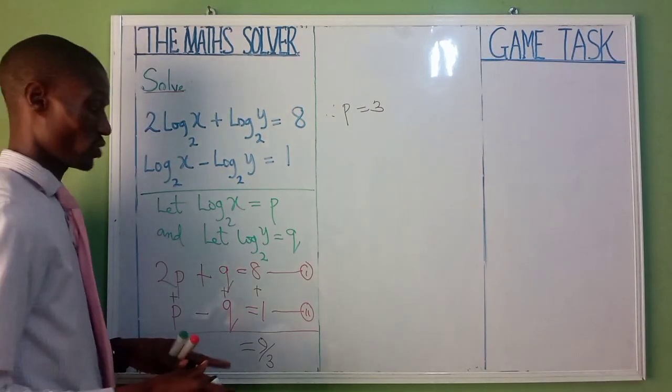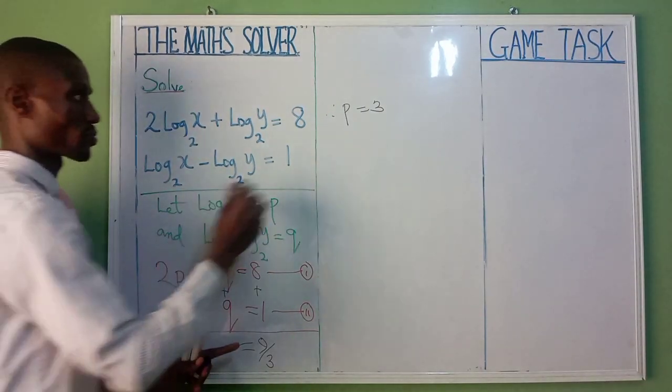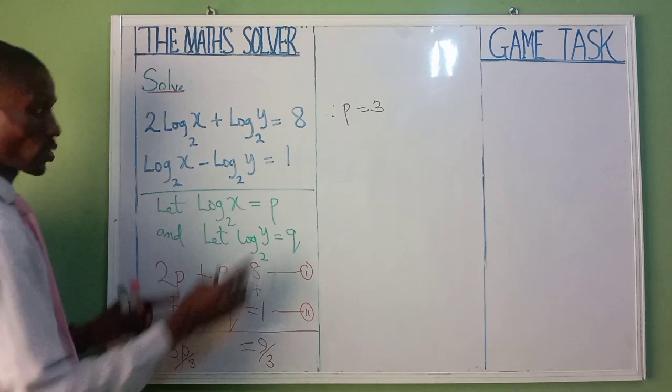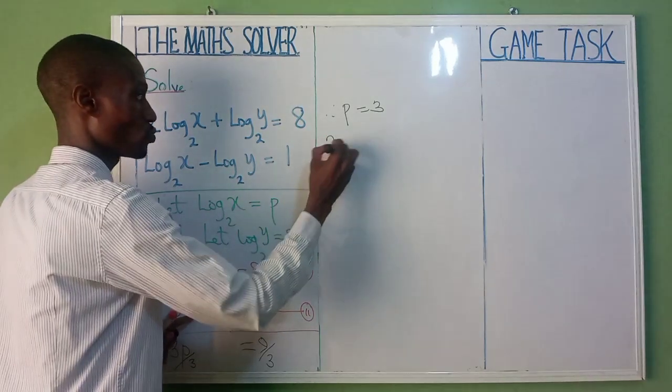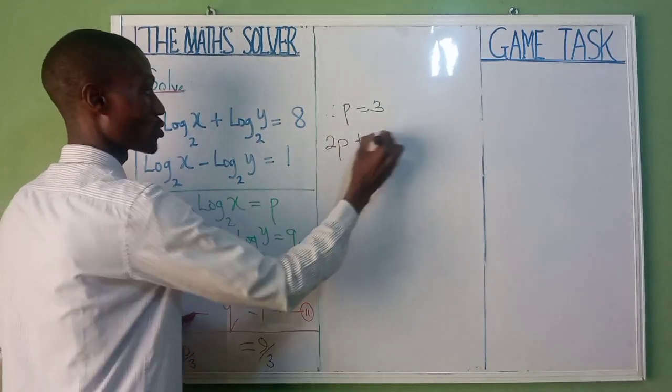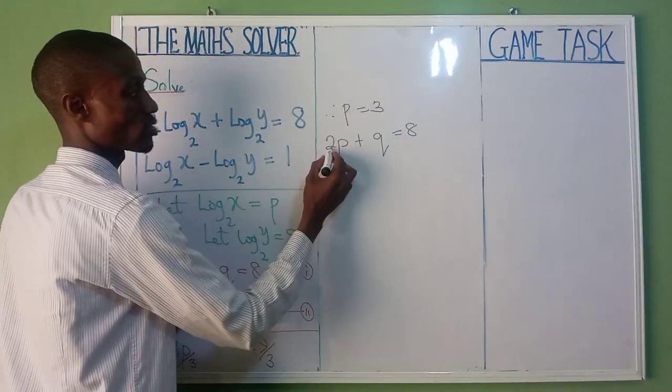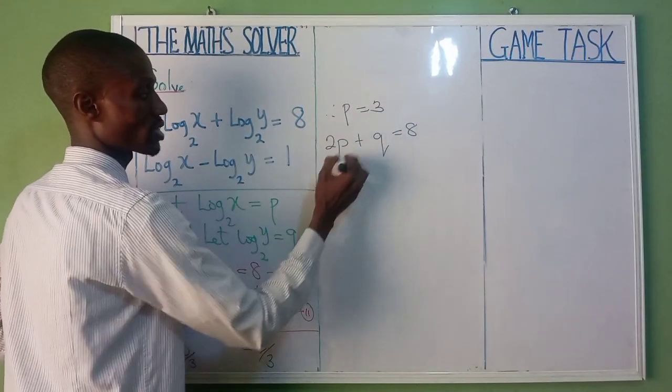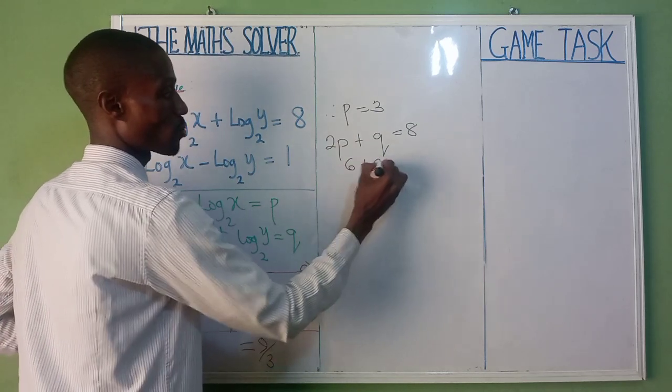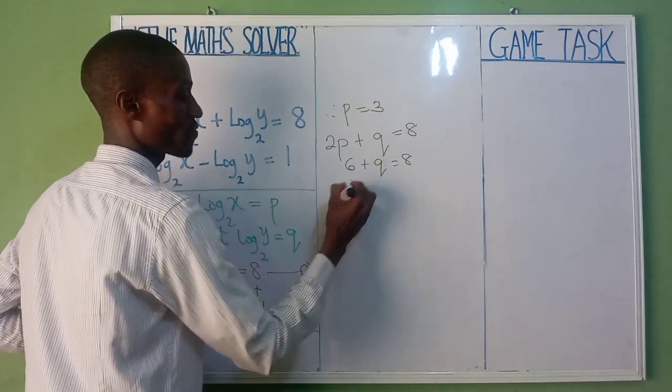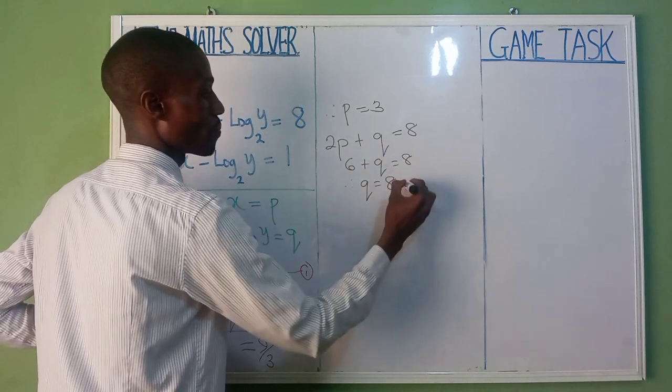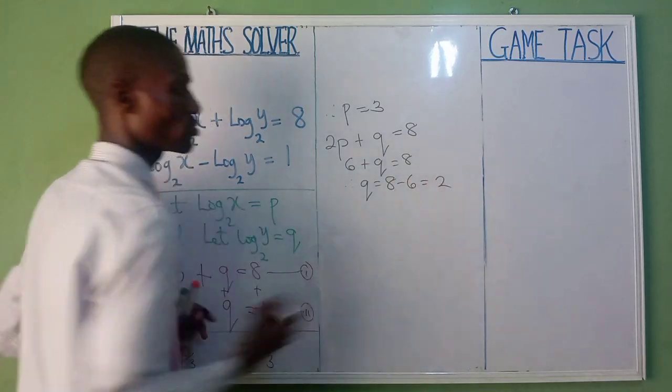Very good, we have gotten our p. To find q, substitute in either equation 1 or 2. I want to use equation 1, so that is 2p plus q equal to 8, and our p is 3. That is 2 times 3, which is 6 plus q, equal to 8. Therefore, q equal to 8 minus 6, which is 2. Very good.